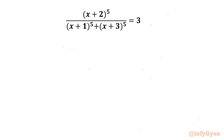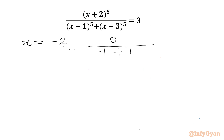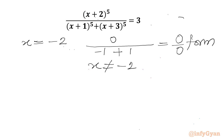Let us get started by checking our equation at x = -2. The numerator will be 0^5 = 0, over the denominator: (-2+1)^5 + (-2+3)^5 = (-1)^5 + (1)^5 = -1 + 1 = 0. So we are getting the indeterminate form 0/0. Therefore x cannot be equal to -2.